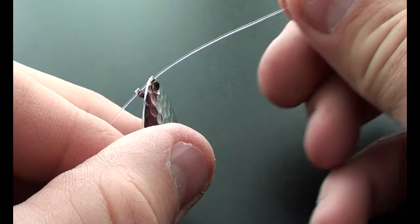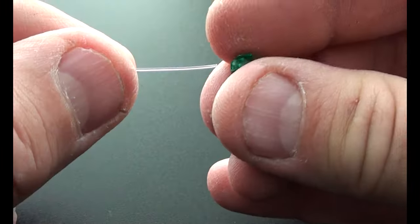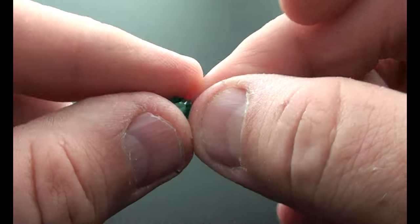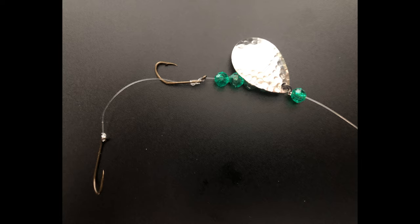Once the clevis is down against the four beads on the bottom side, you're going to add your final bead. Once you've done that, you've basically got your crawler harness made up. It should look something like this. The last thing we need to do is figure out how we're going to secure it to our main line.